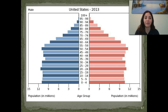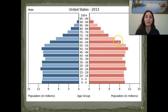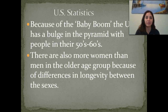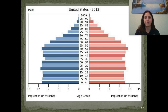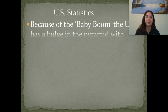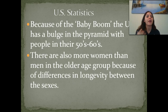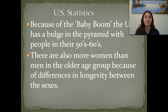This is the population pyramid for the United States. We have a pretty level curve as far as how many people are being born and how many are surviving. People are living well into their 60s, 70s, 80s, and 90s. There is a little difference between males versus females because males don't typically live quite as long. We also have a bulge between people in their early to late 50s — that's because of the baby boom. When people came back from the war with money saved, they wanted to go home and have children. There are also more women than men in the older age group due to differences in longevity.